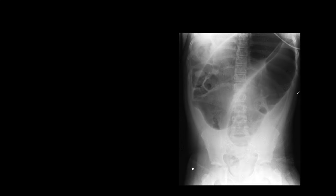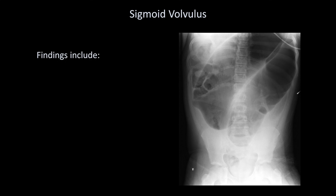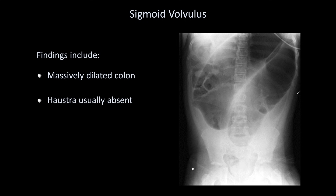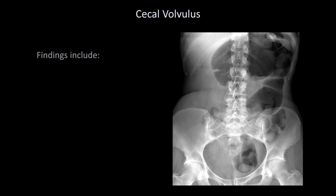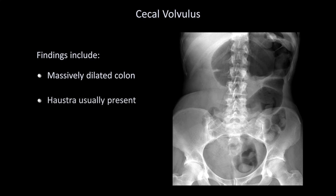Here's another classic x-ray diagnosis: sigmoid volvulus. This is when the sigmoid colon, normally located in the lower left quadrant, rotates around itself, choking off its blood supply like kinking a garden hose. It is an eminently life-threatening diagnosis requiring emergent endoscopic or surgical management, with the endoscopic option only appropriate before the development of peritonitis or perforation. Radiographic findings include a massively dilated colon; haustra within the affected segment are usually absent, and this bowel gas pattern is sometimes referred to as the coffee bean sign. Volvulus can also involve the cecum, resulting in a massively dilated colon with haustra usually present and a lack of colon seen in the right lower quadrant.